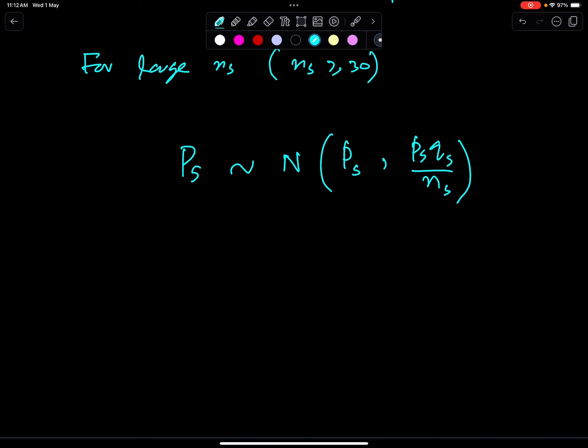And the confidence interval for PS is PS plus minus Z square root of variance, PS QS upon NS. This is the formula for CI of PS.